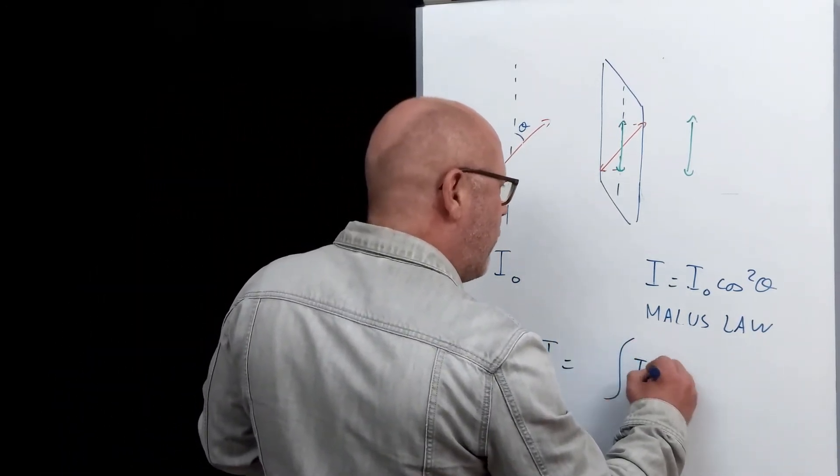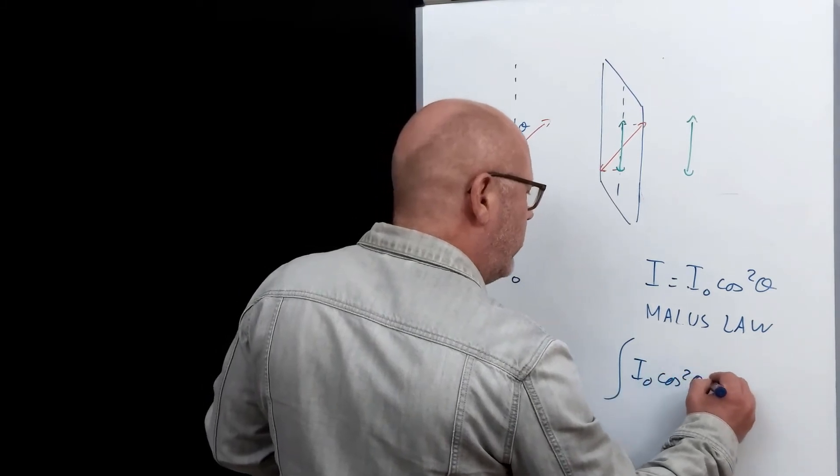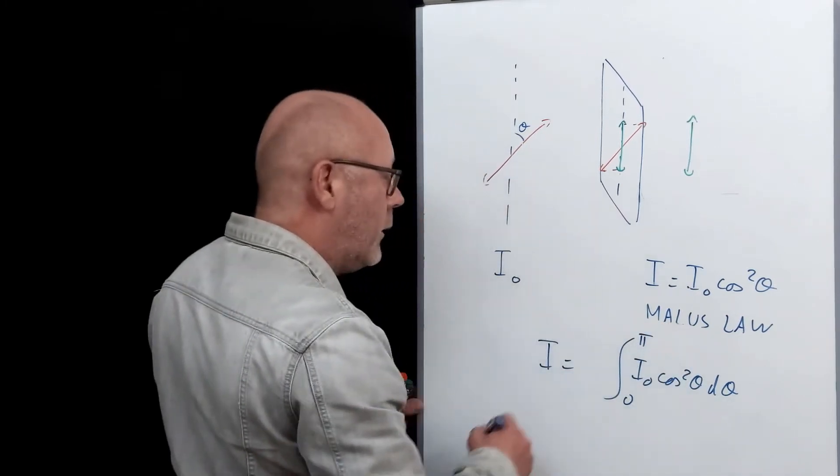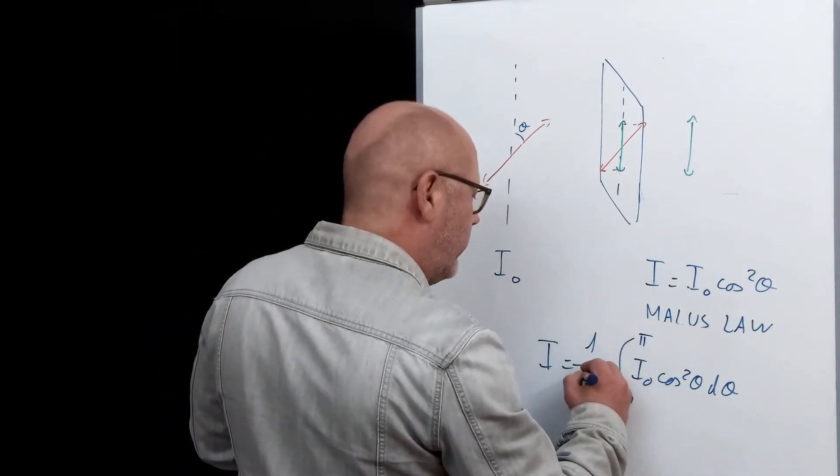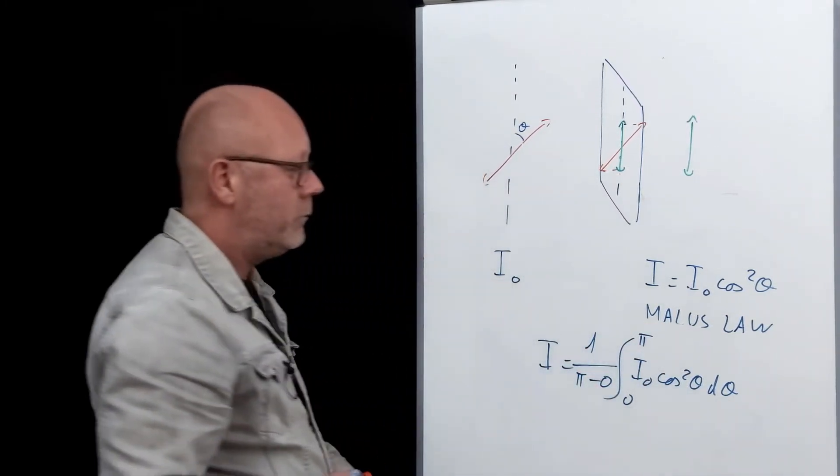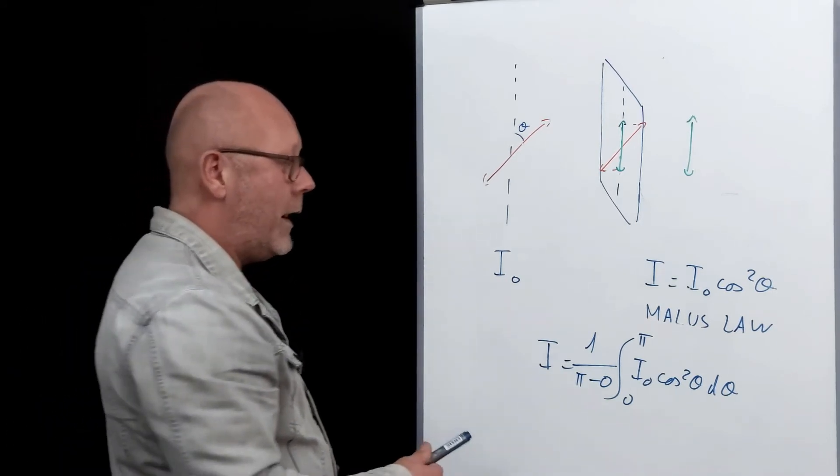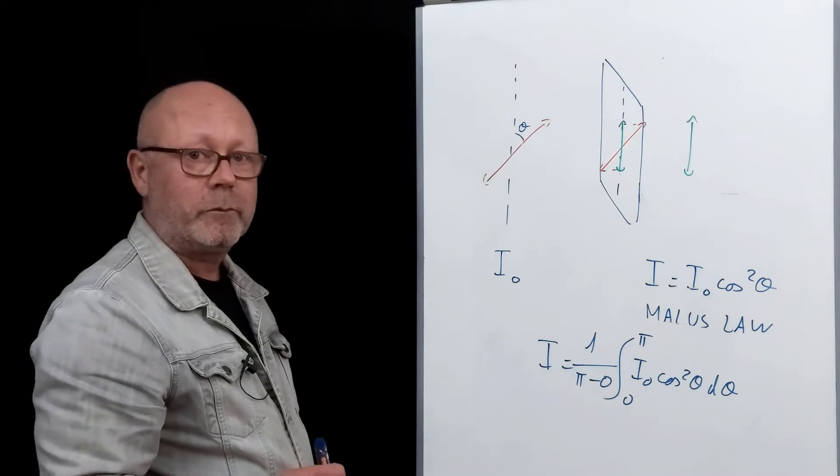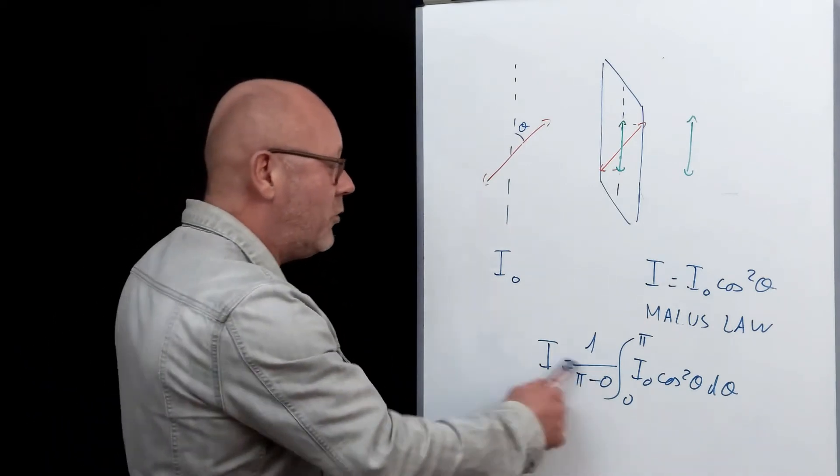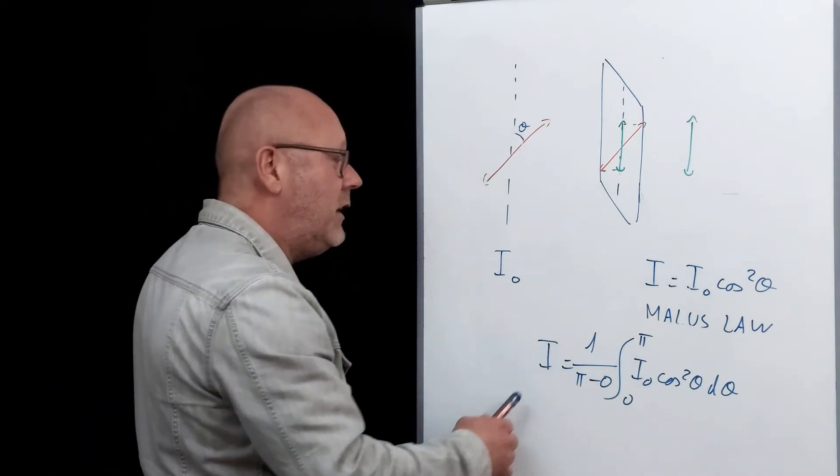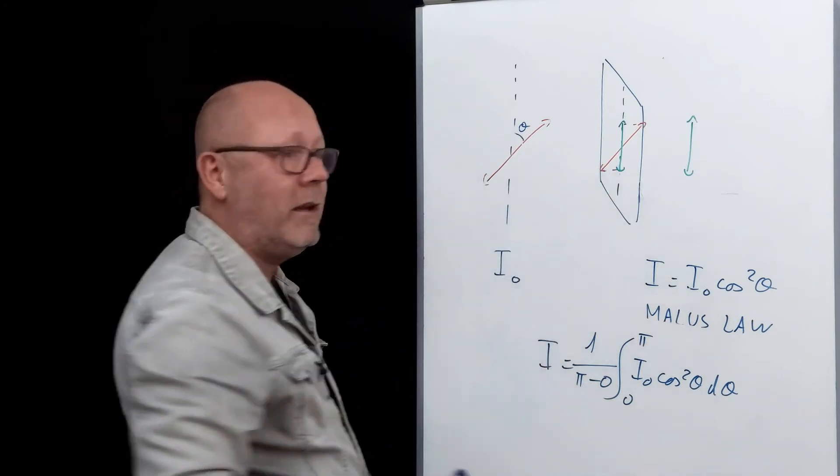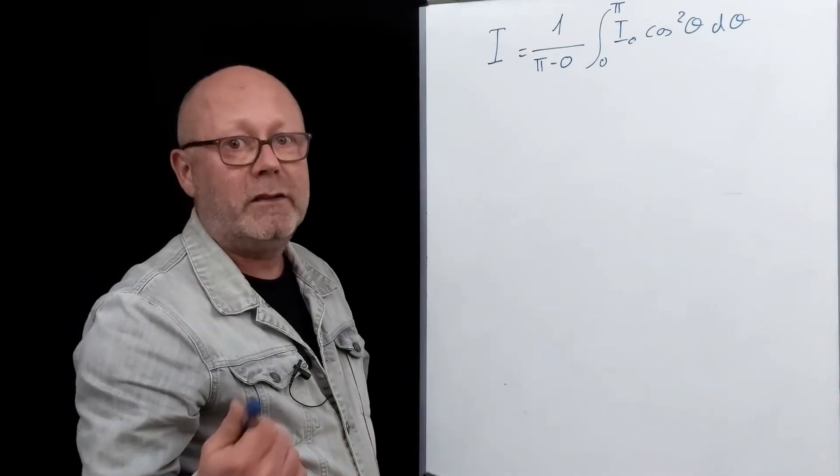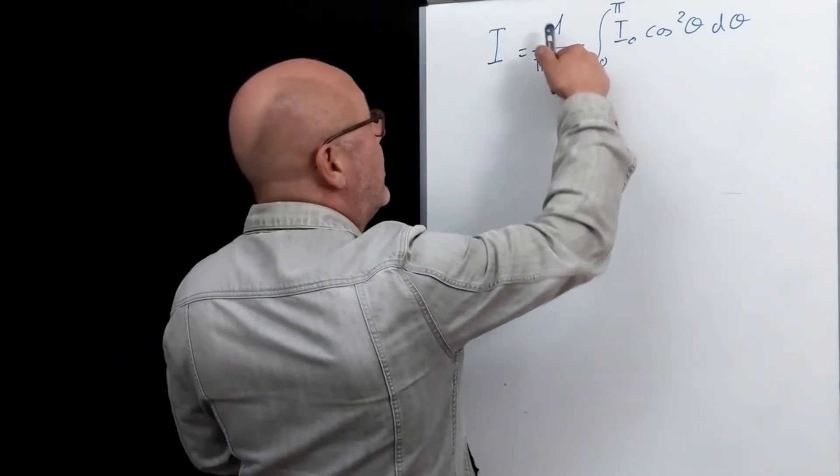I integrate the function over 0 to π, and then I take the average. This is, by the way, in math, how you average a function over an interval. Once we solve this integral, we'll find the intensity that comes out of a polarizer when the incident beam is unpolarized light. I0 is a constant, so I can take it out of the integral.